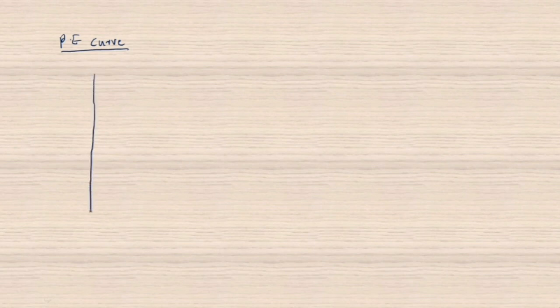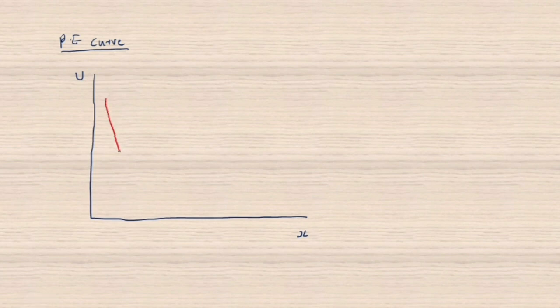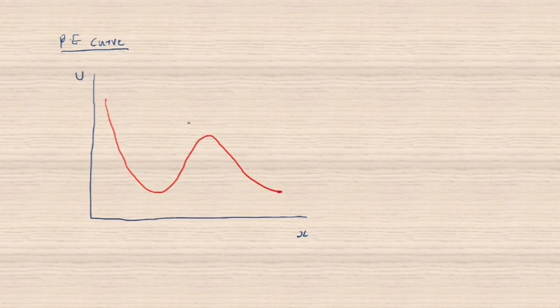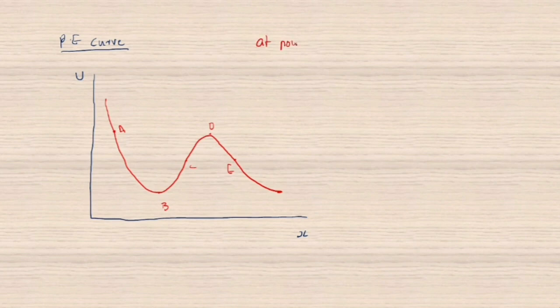Now let's think about a potential energy vs. displacement curve. We draw a graph with x (displacement) on the horizontal axis and U (potential energy) on the vertical axis. The curve varies across points A, B, C, D, and E. At point A, the slope is negative.